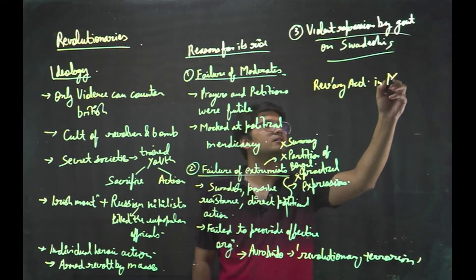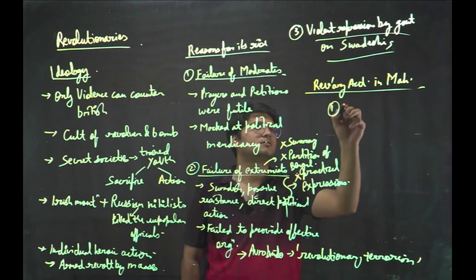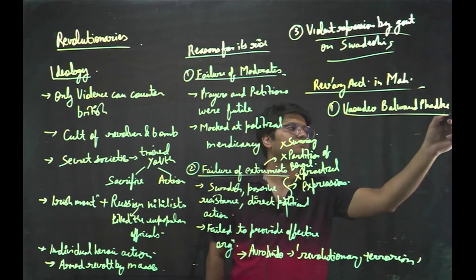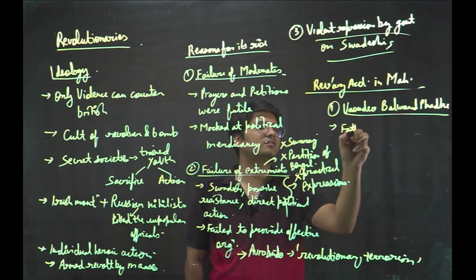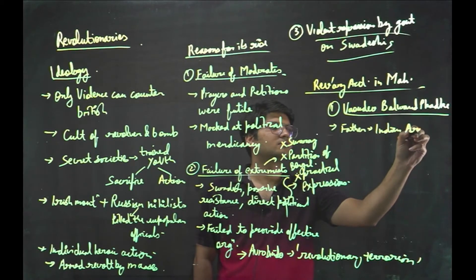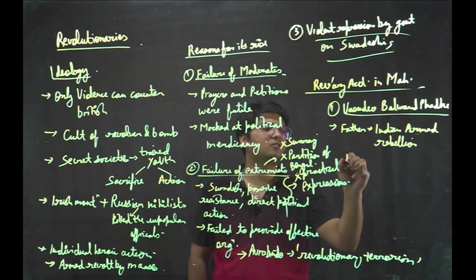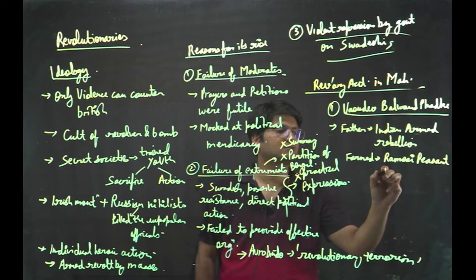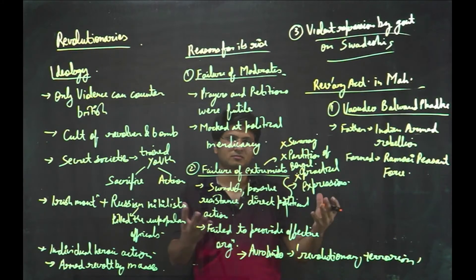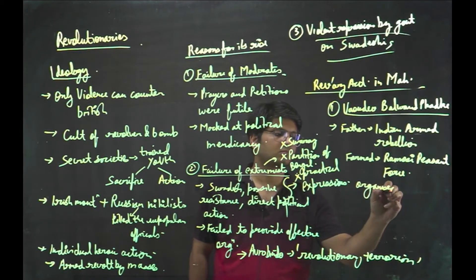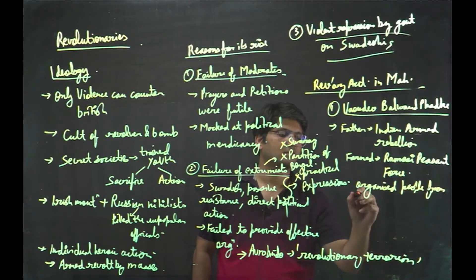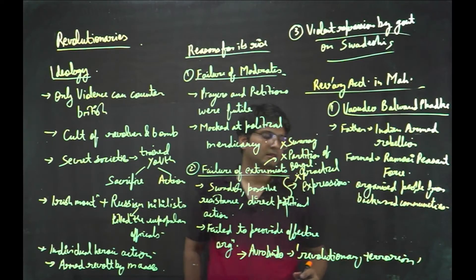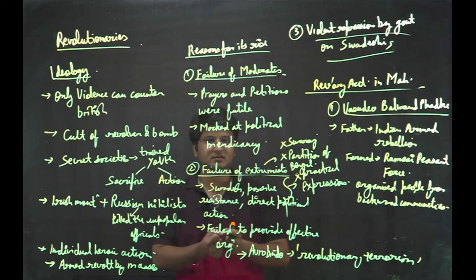Revolutionary activities in Maharashtra. Wasudev Balvant Fadke. He is considered as father of Indian armed rebellion. He formed Ramosi peasant force. He organized the people from backward areas and communities.